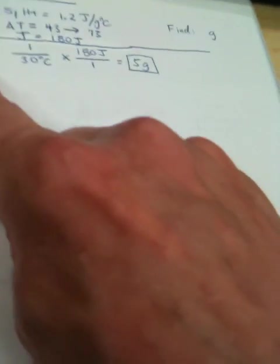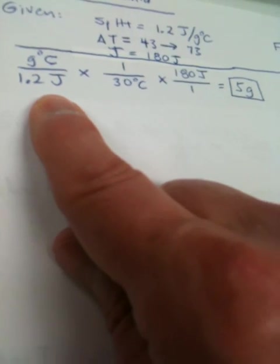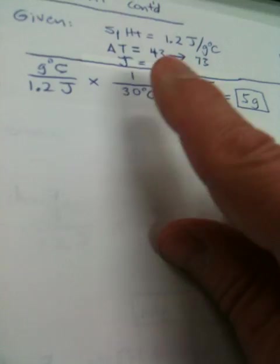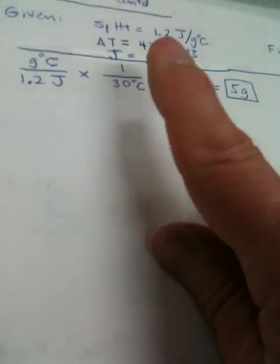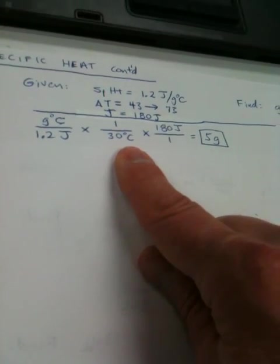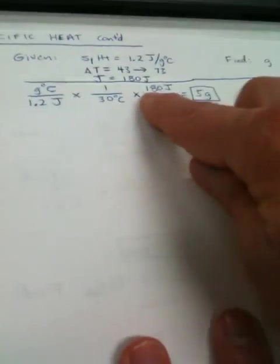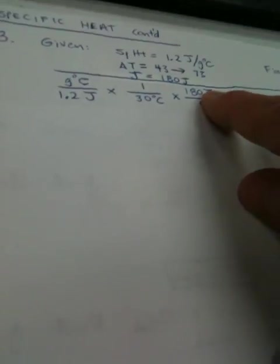We've got our grams degree centigrade on top. That looks a little strange. We've got 1.2 joules on the bottom. Now, look. This you have not run into before. This is what happens when you have three variables. I'm going to go down and get this guy on the bottom. These guys are on top. This cancels with this.